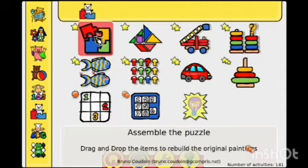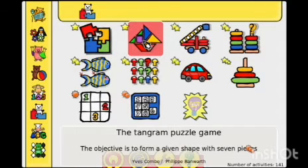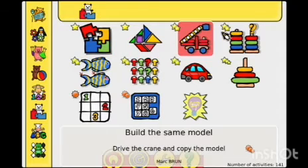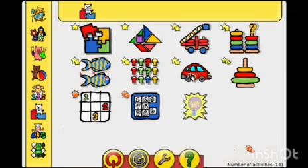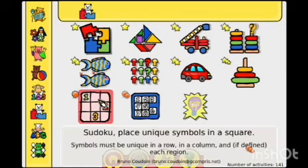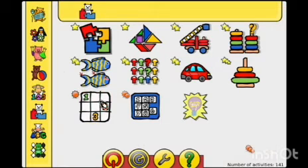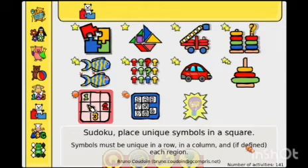Then, the options will appear. And, in that, many games are there. You can see the game: Assemble the Puzzle, Tangram Puzzle, then build the same model. Like that, many games are there. Then, from this, Sudoku plays unique symbols in a square.